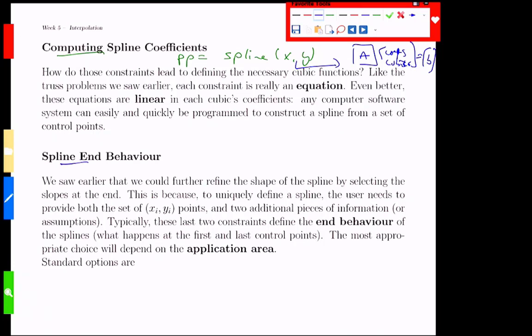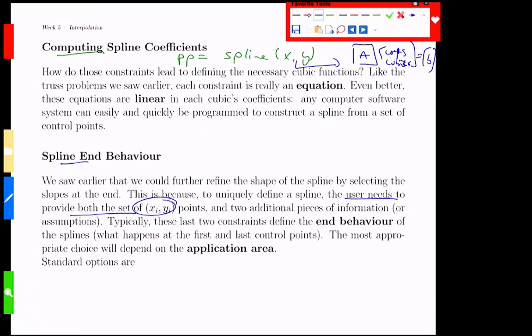Even better, what we get is the user needs to provide two sets of x, y points, and, this is a perk, two additional pieces of information. So when we set up our system of equations, it turns out that we have just enough data except I need two more things. And this is great because we can actually choose something extra to fine tune.